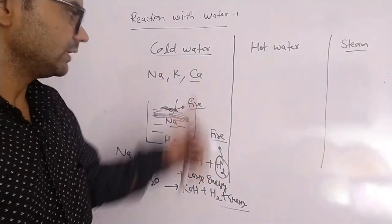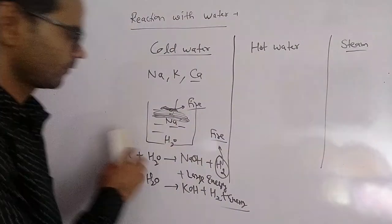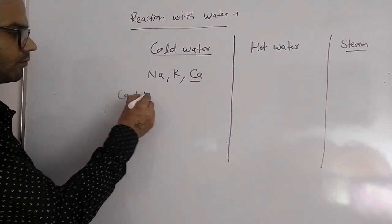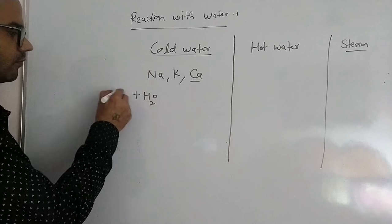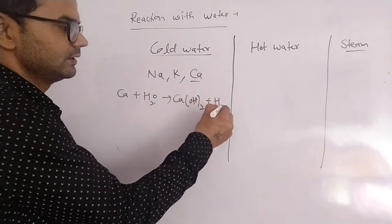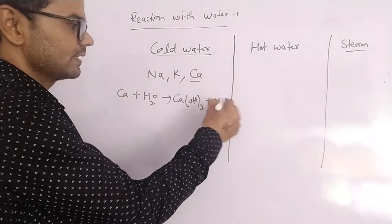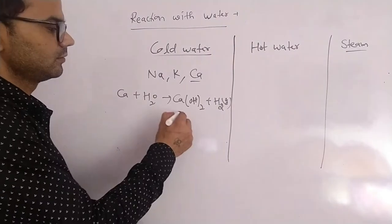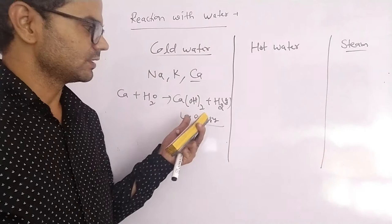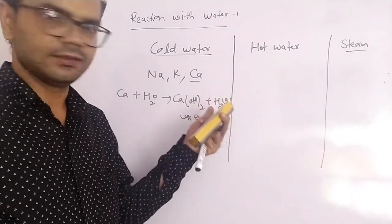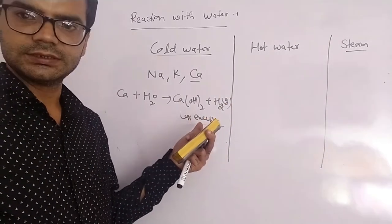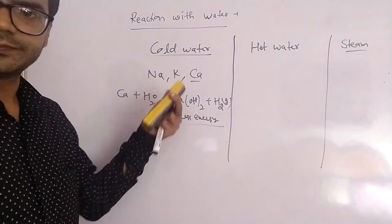But in the case of calcium, calcium hydroxide is formed and hydrogen gas is released. However, in this reaction less energy is released, and this lesser energy is not sufficient to ignite the hydrogen gas — the hydrogen gas will not burn in air. Only a small amount of energy is released. Why? Because of reactivity.